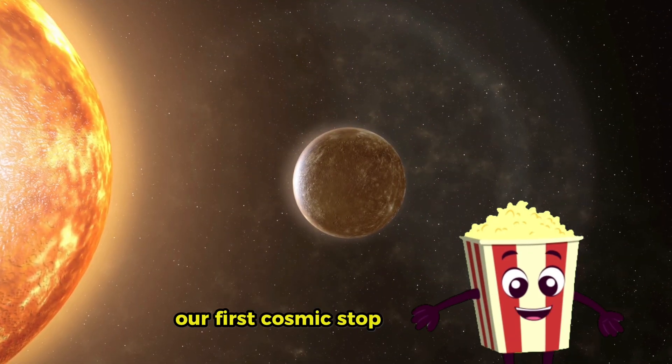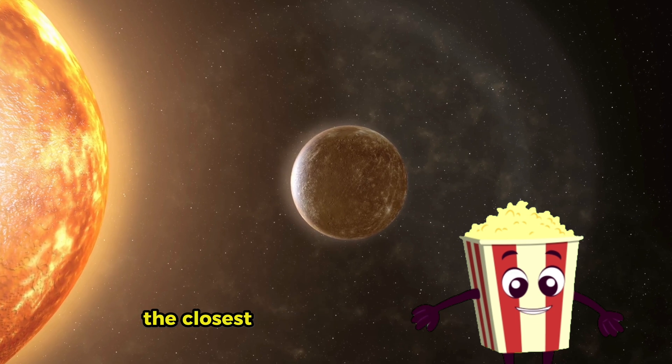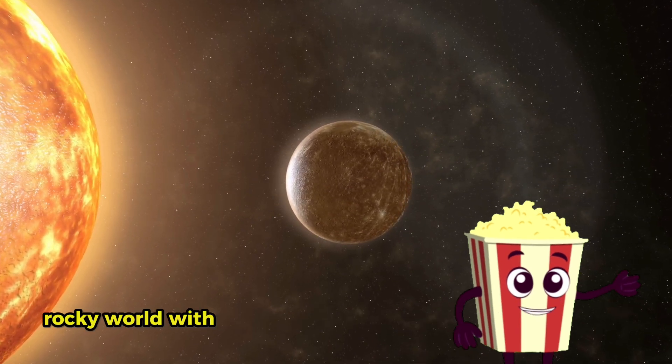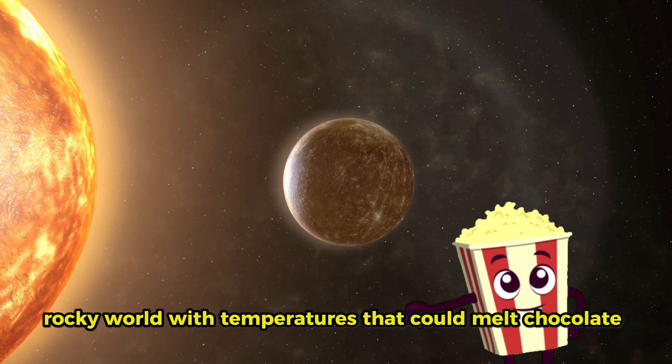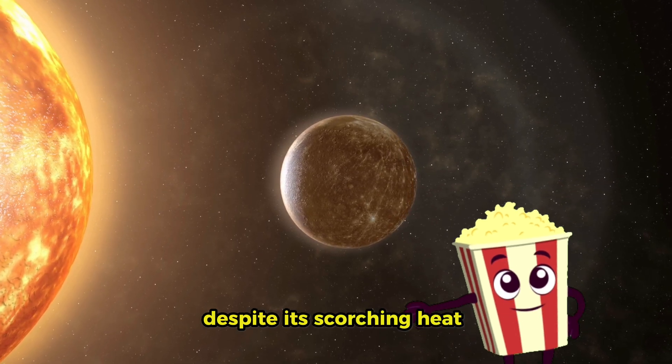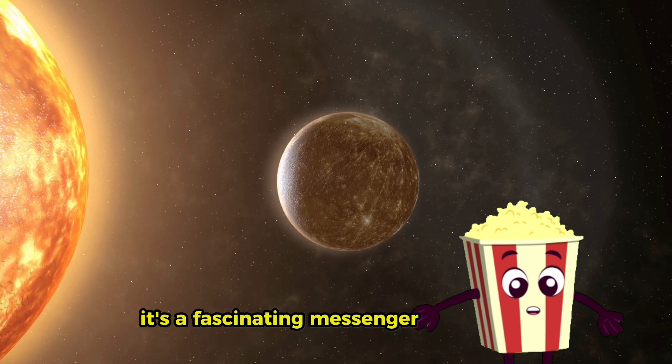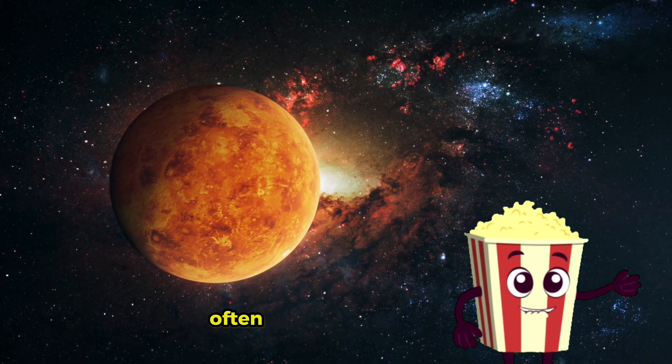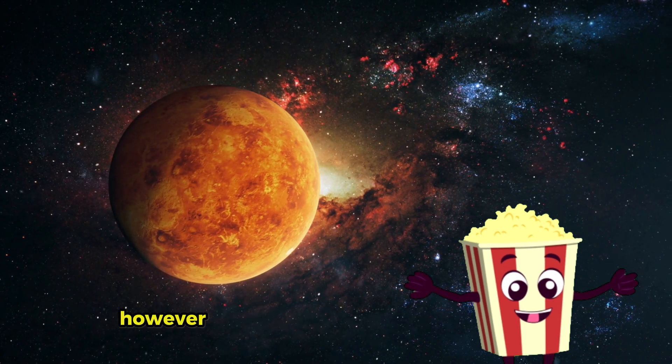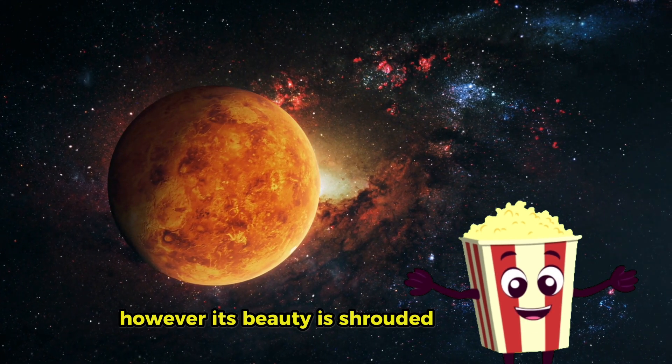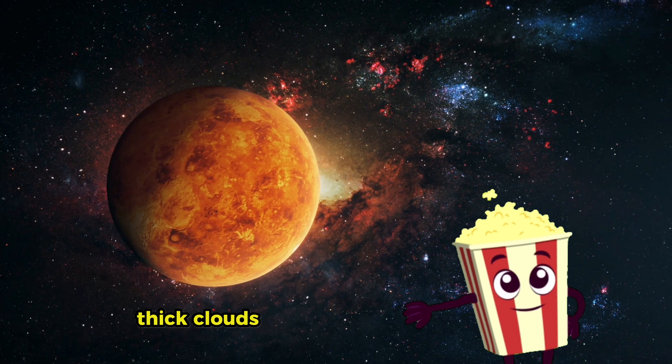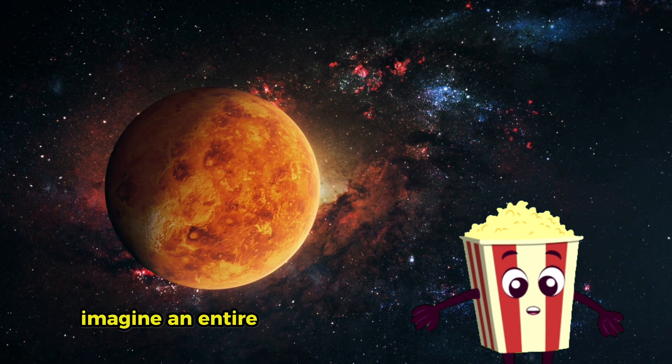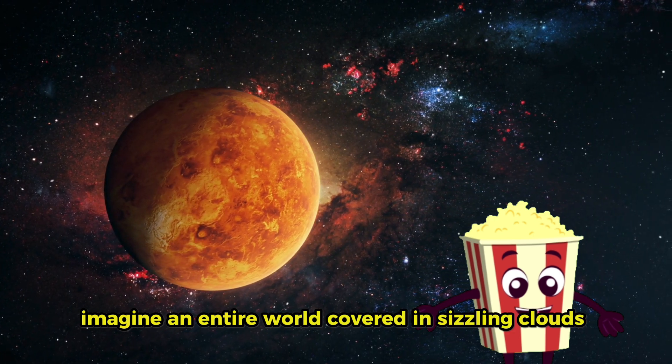Our first cosmic stop is Mercury, the closest planet to the Sun. It's a hot, rocky world with temperatures that could melt chocolate. Despite its scorching heat, it's a fascinating messenger of the Sun. Next up is Venus, often called Earth's twin. However, its beauty is shrouded in mystery. Thick clouds make it the hottest planet, trapping heat like an oven. Imagine an entire world covered in sizzling clouds.